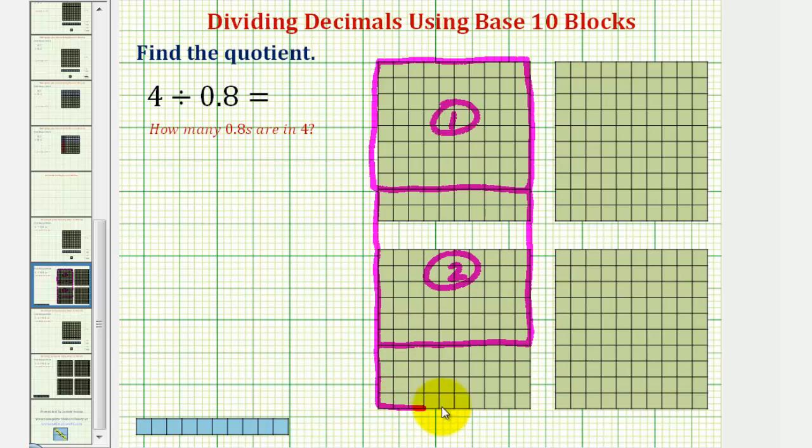And then we have four, and four longs here, for a total of eight longs, or eight-tenths. Here's our third copy. And here we have six, seven, eight longs, for our fourth copy of eight-tenths.